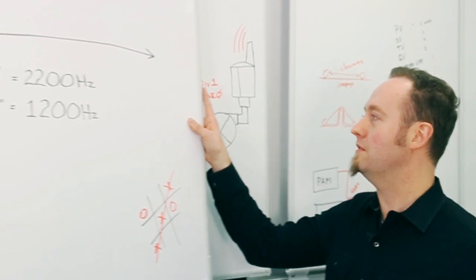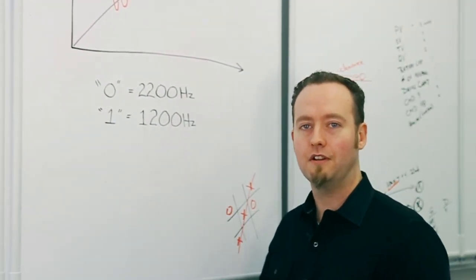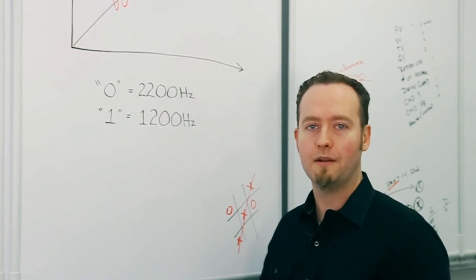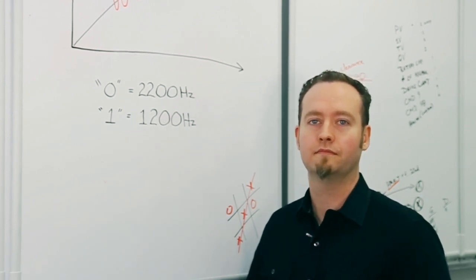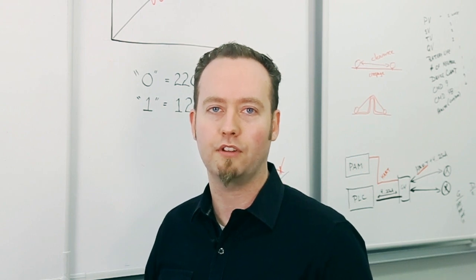And by the way, for the curious among you, a digital 0 is represented by 2200 Hertz, and a digital 1 is represented by 1200 Hertz. HART enables you to collect more information about your equipment's health, efficiency, and reliability.